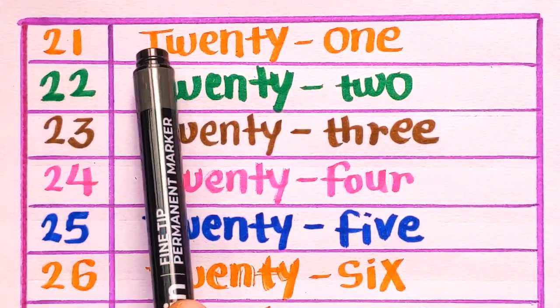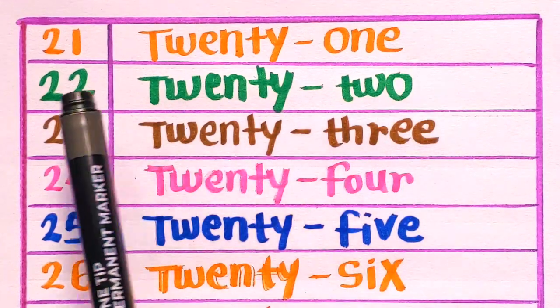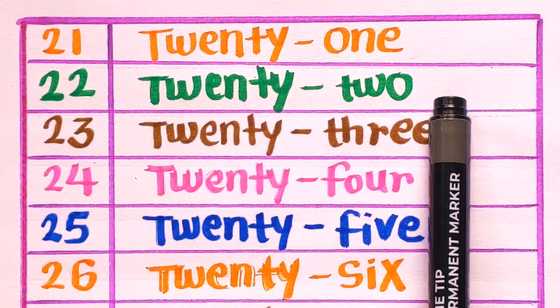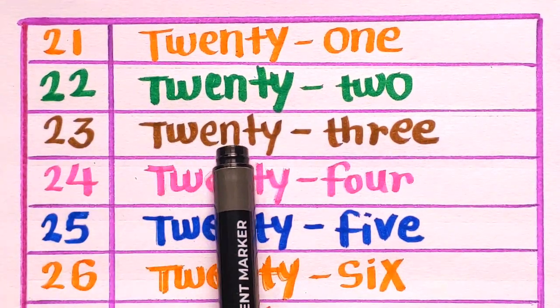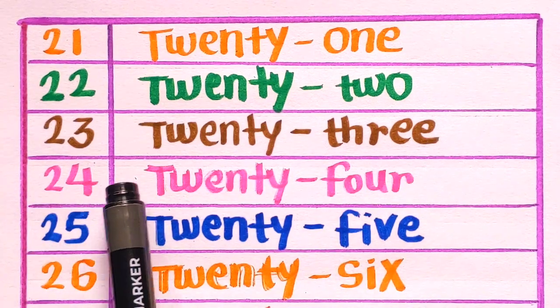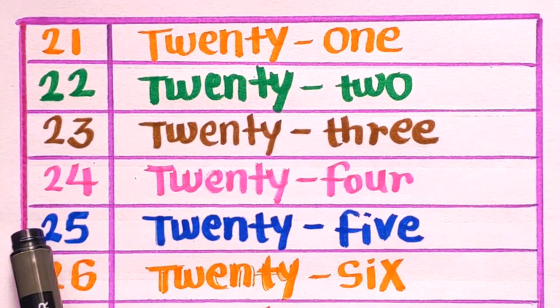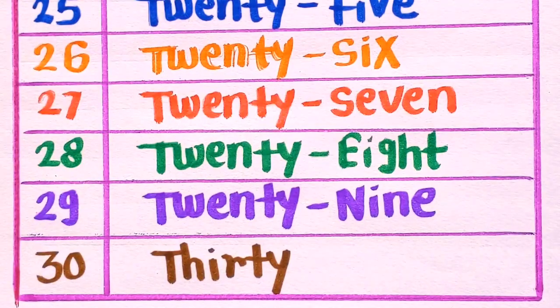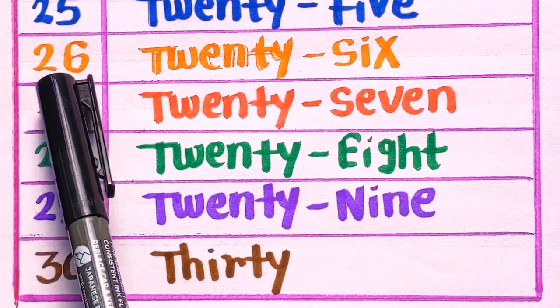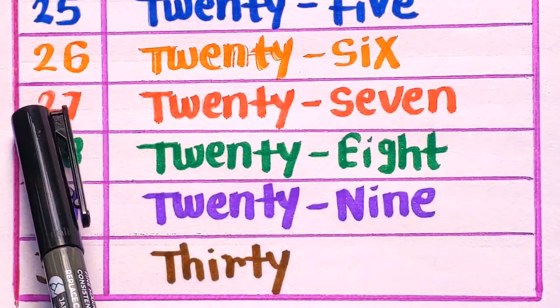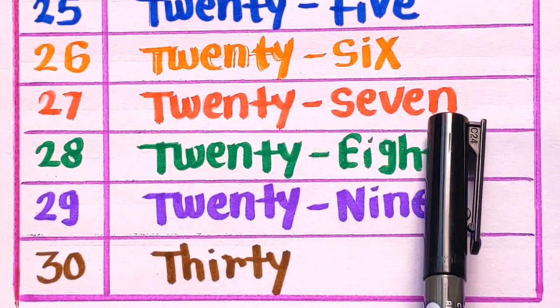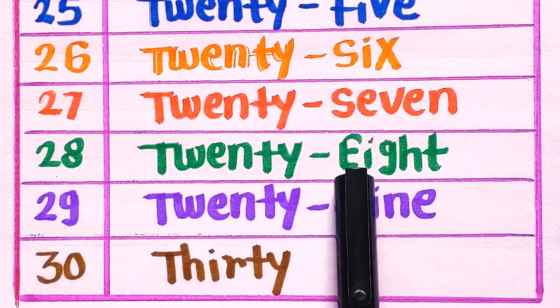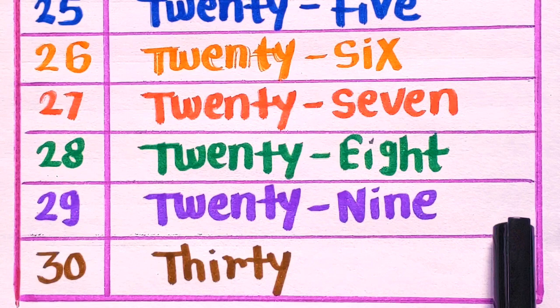2-1-21. 2-2-22. 2-3-23. 2-4-24. 2-5-25. Next is 2-6-26. 2-7-27. 2-8-28. 2-9-29. And 3-0-30.